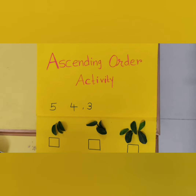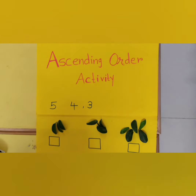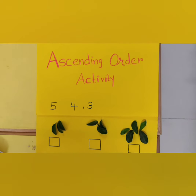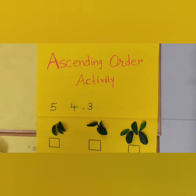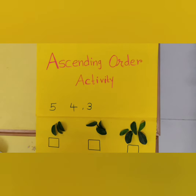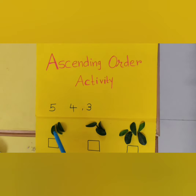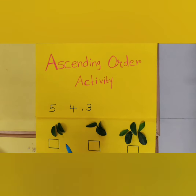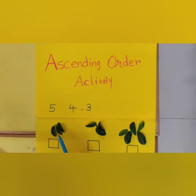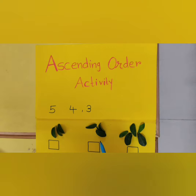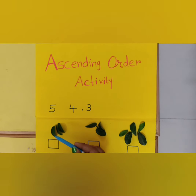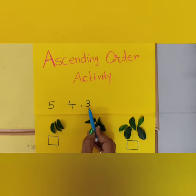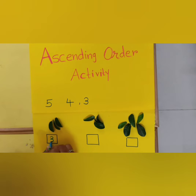तो पहले हम आज ascending order की activity करेंगे. तो यहाँ पे कौनसा नम्बर दिया है? 5, 4, 3. तो ascending order में सबसे पहले क्या आता है? सबसे small number आता है. तो जब भी हम forward counting बोलते हैं, तो 5, 4, 3 में से कौनसा नम्बर पहले बोलते हैं? 3. फिर 4, और 4 के बाद 5. यहाँ पे कितने leaves हैं? 1, 2, 3. तो पहले हम 3 लिखेंगे.